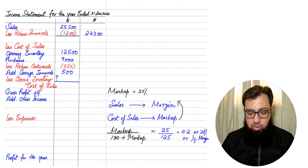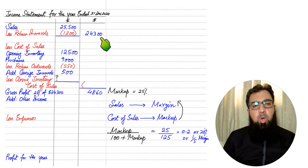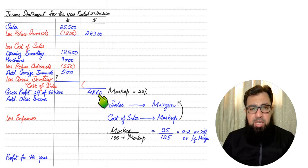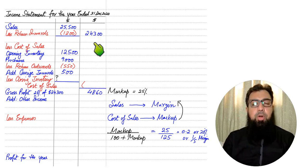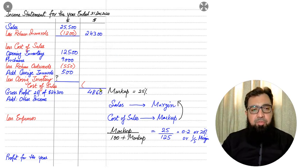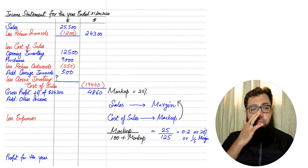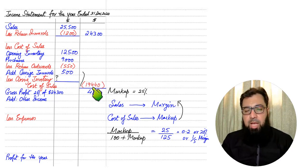Now we have our margin of 20%, which is applied on the sales figure. Applying 20% to net sales of 24,300 gives gross profit of 4,860. If we are selling for 24,300 and gross profit is 4,860, then deducting profit from sales gives cost of sales. Cost of sales is therefore 19,440.